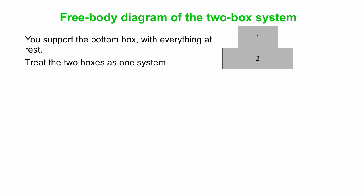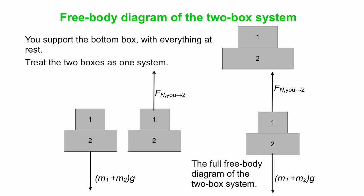If you treat the two objects as one system, then you can say, what's interacting with that two-box system from outside the system? The Earth, M1 plus M2, all multiplied by G. And you, you are exerting that upward force on box number two, but that's part of the two-box system. And that is it. So you put those together, that's the full free body diagram. Again, this shows no net force acting on the system, also consistent with the system remaining at rest.